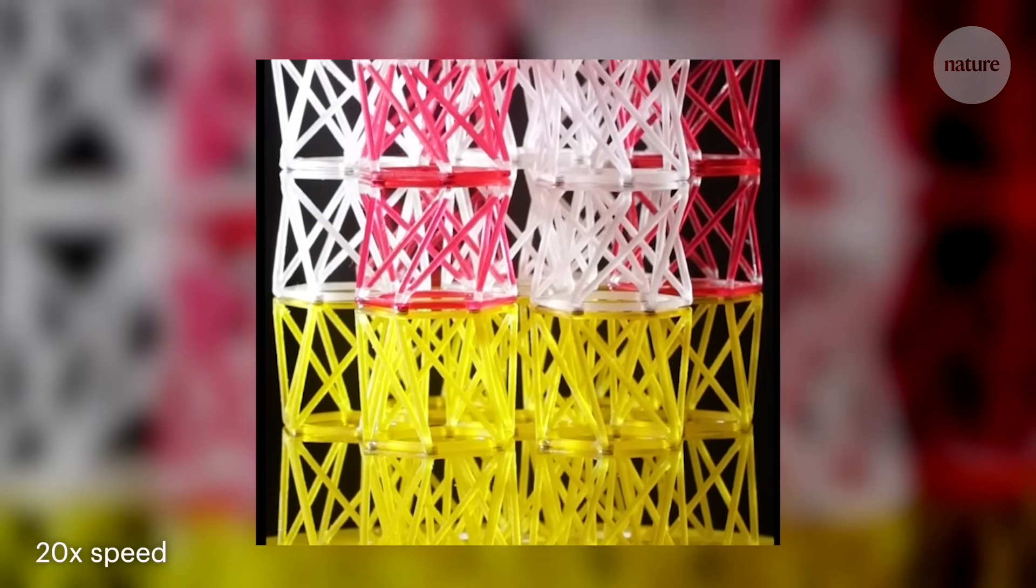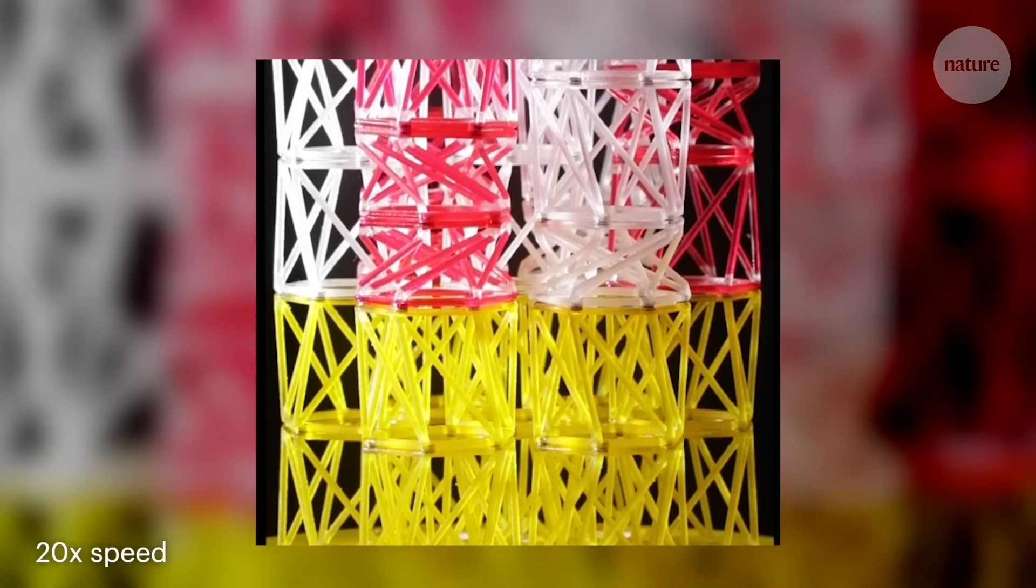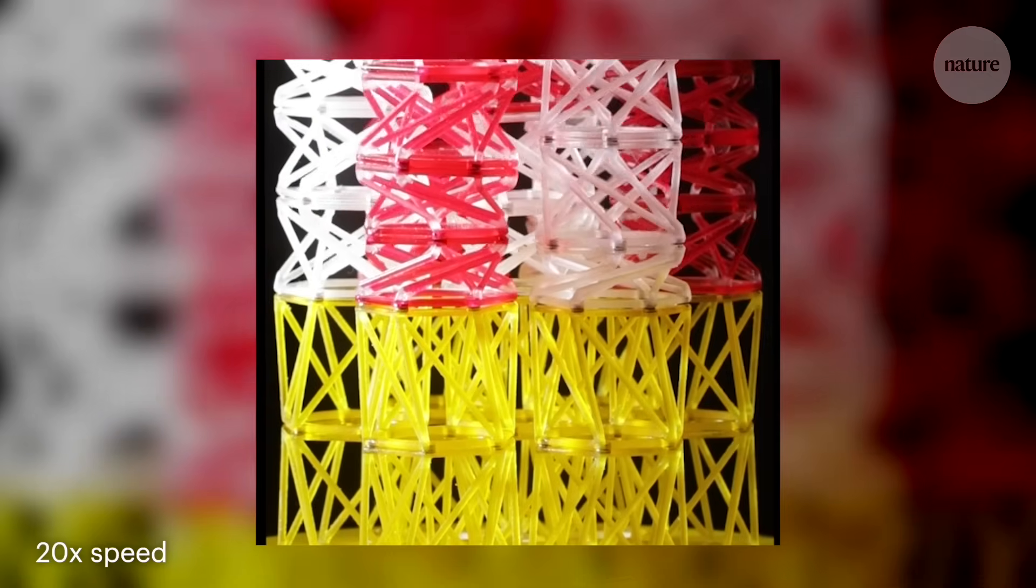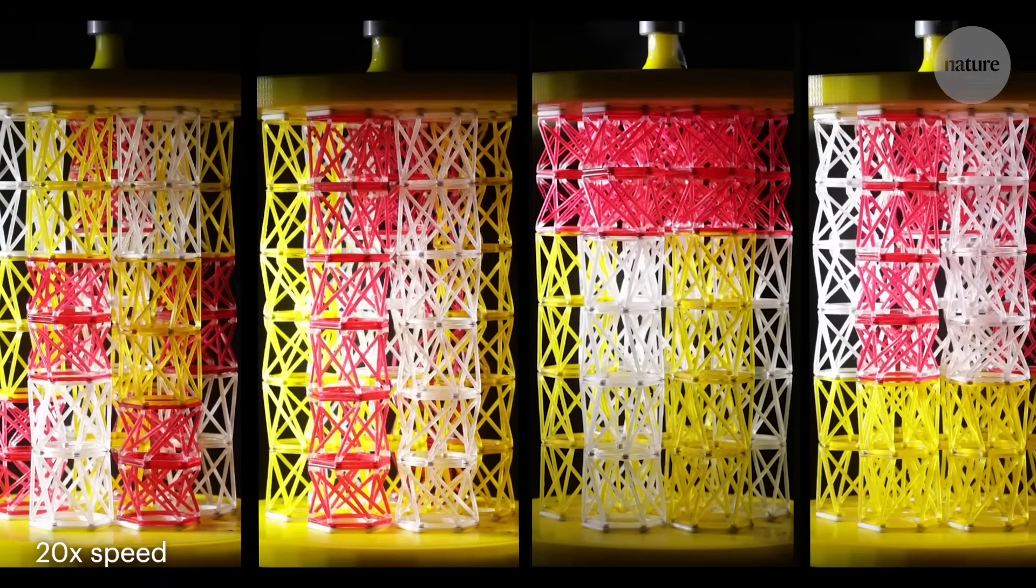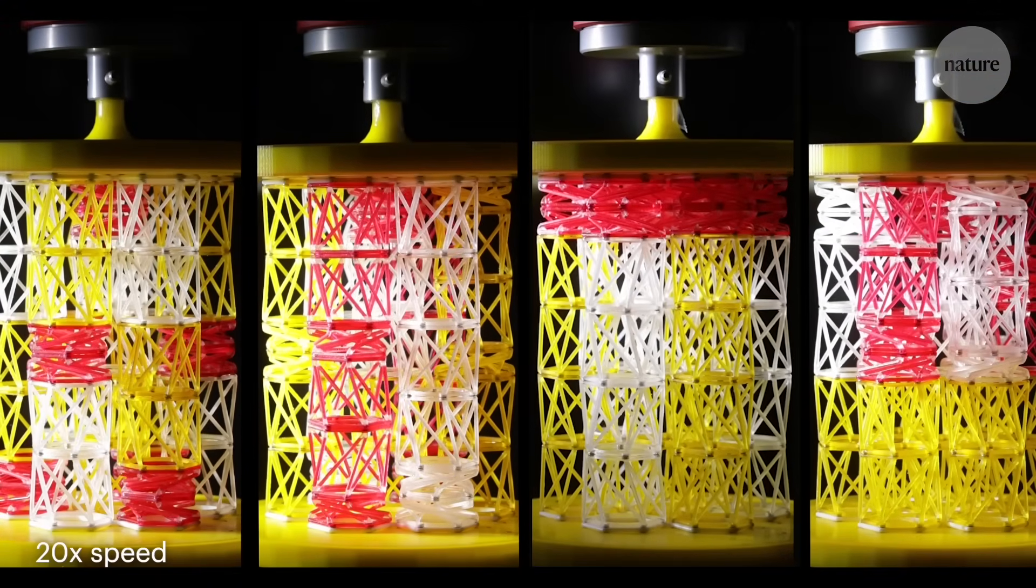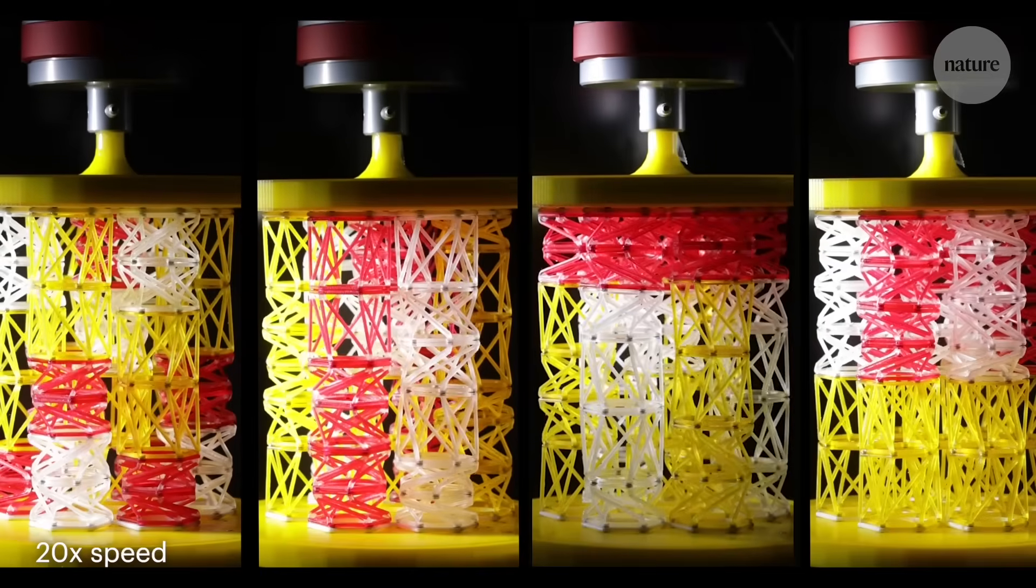The team has also used different materials to make modules with different stiffnesses. The red, the white and the yellow behave differently. Some are weaker, some are stronger. Arranging these stronger and weaker elements in different ways means these columns react differently as the load is increased.